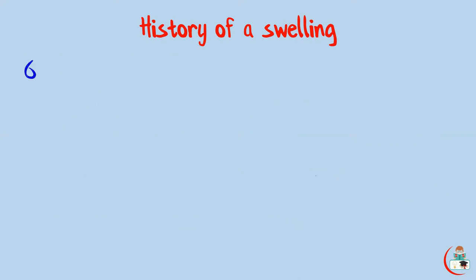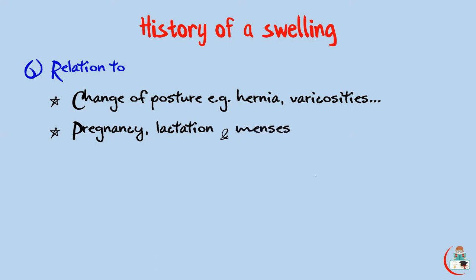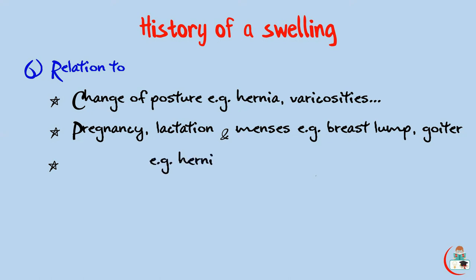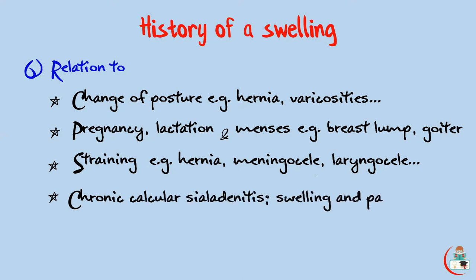Ask whether the swelling is related to change of posture — for example, a hernia appears on standing and may disappear on lying down; varicose veins of the lower limbs disappear on lying flat with leg elevation. In females, ask about the relation of the swelling to pregnancy, lactation, and menses — very important when taking history of a breast lump. Physiologic goiter appears with menses. Any swelling connected to a body cavity, like a hernia, meningocele, or laryngocele, will increase in size on straining. In chronic calcular submandibular sialadenitis, the swelling and pain are related to food intake, especially foods with bitter taste.